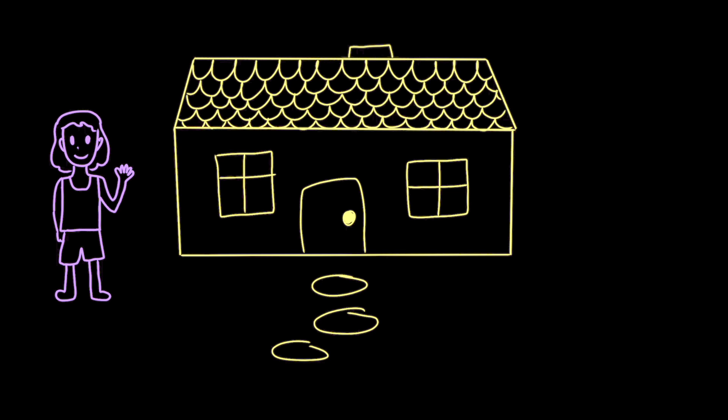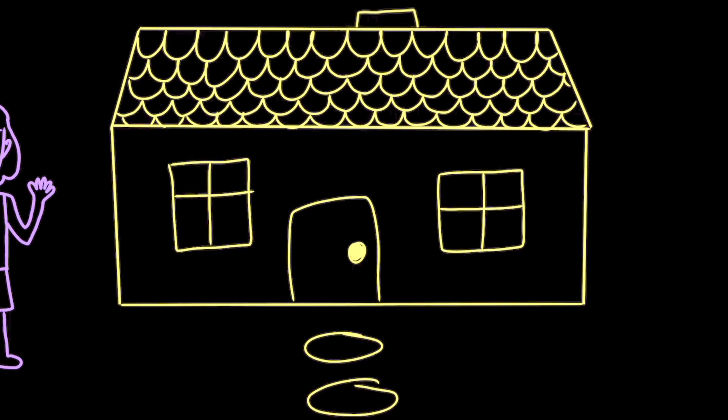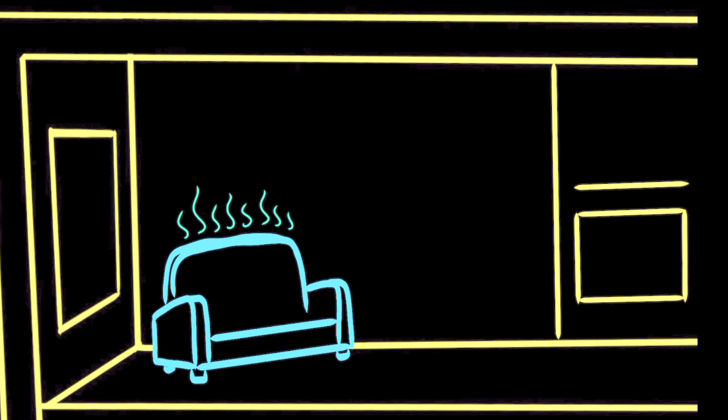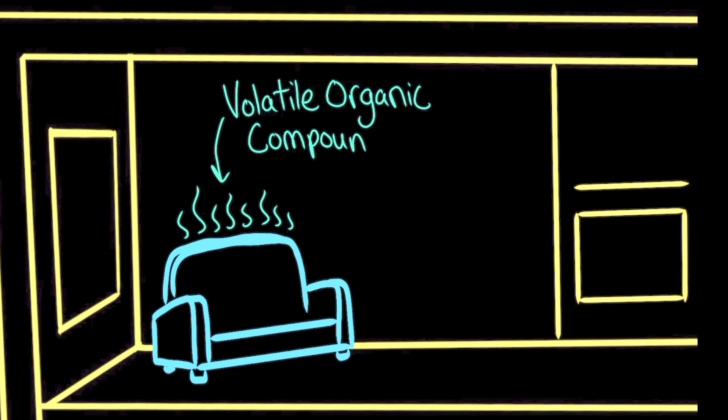So where could the indoor air pollution be coming from? Let's take a look at Ava's house. Indoor air pollution can come from many different kinds of sources, both human-made and natural. Ava's furniture, paneling, and carpets could be releasing volatile organic compounds, which are often written down as VOCs. And they basically include substances that form gases at room temperature, like formaldehyde.